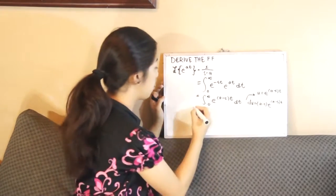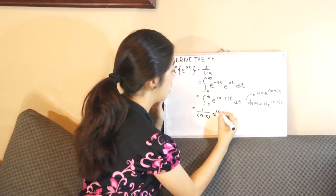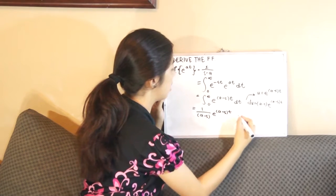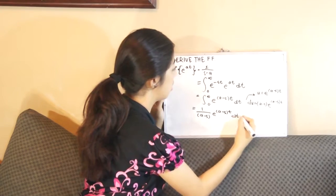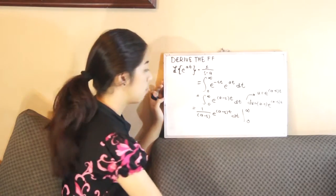Factoring out, we have then 1 over a minus s times e raised to a minus s times t, dt. And now we can evaluate that through 0 to infinity.